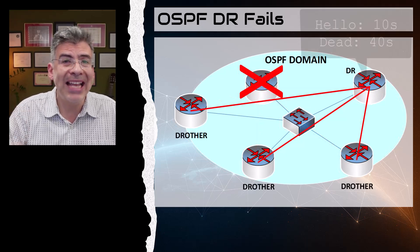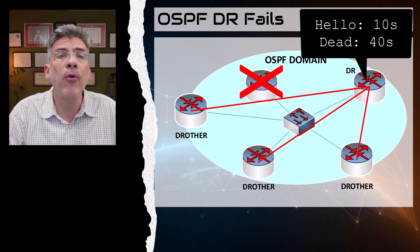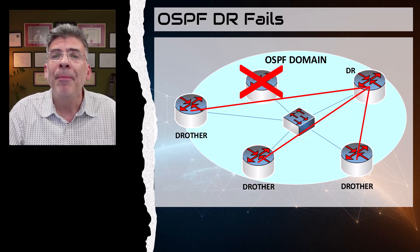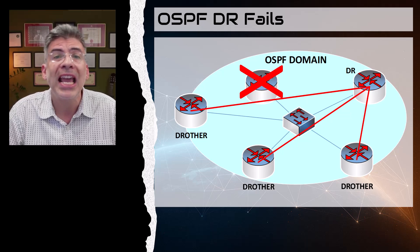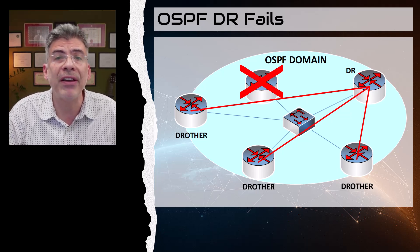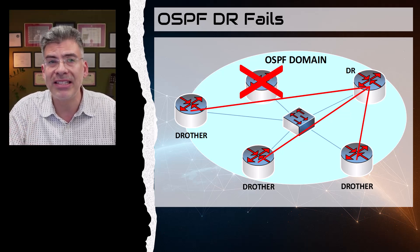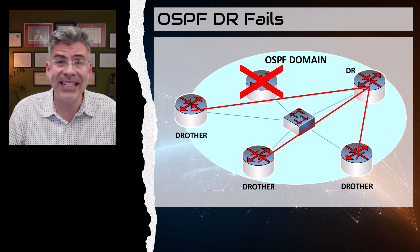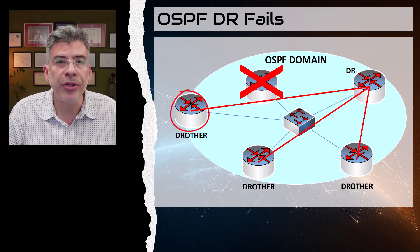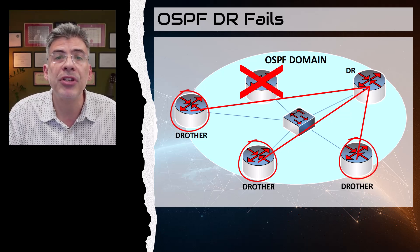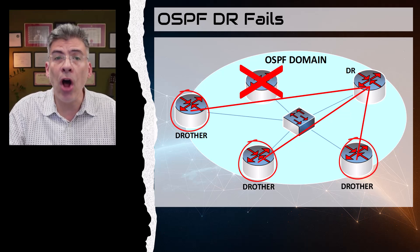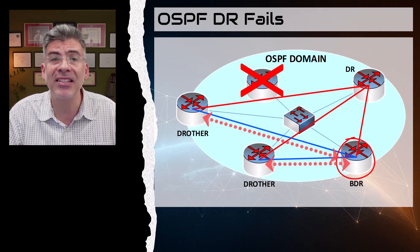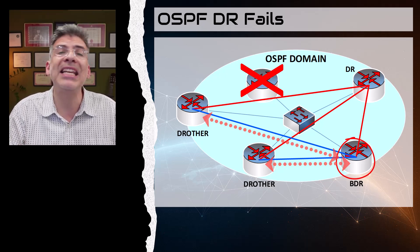The hello and dead timers are 10 seconds and 40 seconds respectively. So it will take up to 40 seconds for a BDR to realize that the DR has failed before it takes over. That may seem like a long time, but if a DR fails, the rest of the OSPF topology is still stable and routing traffic. So user traffic will not be affected except for any traffic served by the DR itself, and the rest of the OSPF topology remains converged and operational. Once the BDR has promoted itself to a DR, there is no longer any BDR, so the DR other routers have an election among themselves to choose a new BDR. The DR stays since it has already been defined, so no election takes place for the DR. Once the new BDR has been elected, it forms adjacencies with the rest of the DR others, and the OSPF DR-BDR arrangement is stable once again.